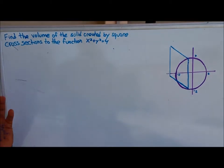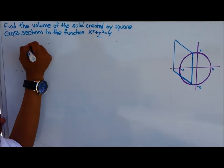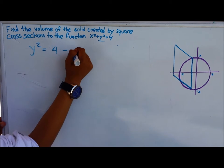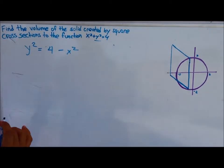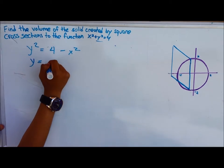To find the cross section, first you need to isolate the y variable. So you have y squared equals 4 minus x squared when you move x squared to the other side. Then you take the square root of both sides.